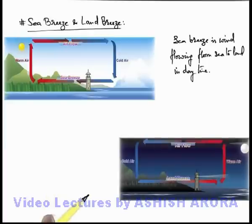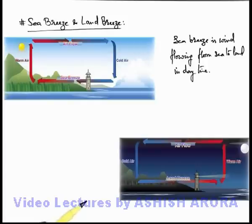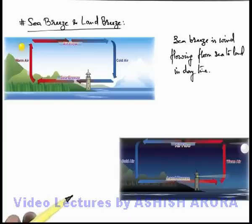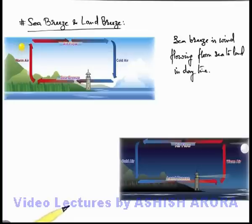The opposite phenomena is land breeze, which happens at night. Because of the temperature difference between land and sea, in night when atmospheric temperature goes down, land cools faster compared to sea water. Now in this situation sea water temperature is more compared to that of land, so the air above the sea water rises up to higher altitude, due to which the pressure above the sea water decreases. The air in contact with the land at night is at high pressure, so it starts travelling towards sea. This is the phenomena opposite to that of sea breeze, which we call land breeze.